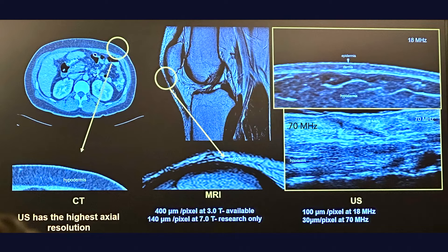I'm going to use a tool to show you. Let's look at the different methods we can use to examine structures below the surface of the skin. We've got the CT scan (computerized tomography), we've got the MRI (magnetic resonance imaging), and we have the ultrasound. The ultrasound has the highest axial resolution of all three.